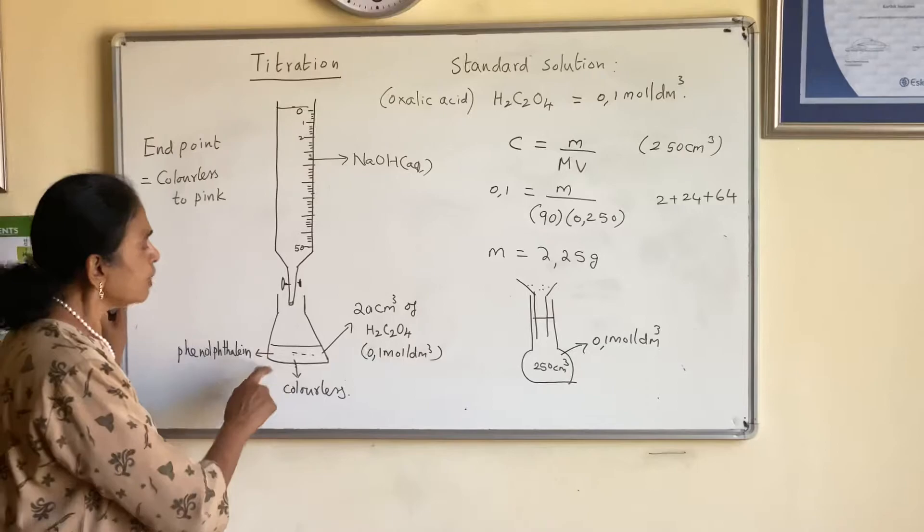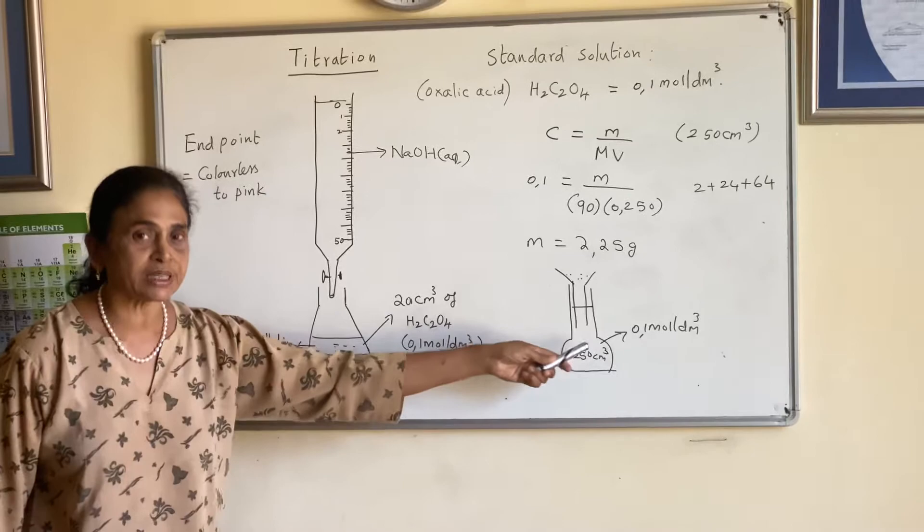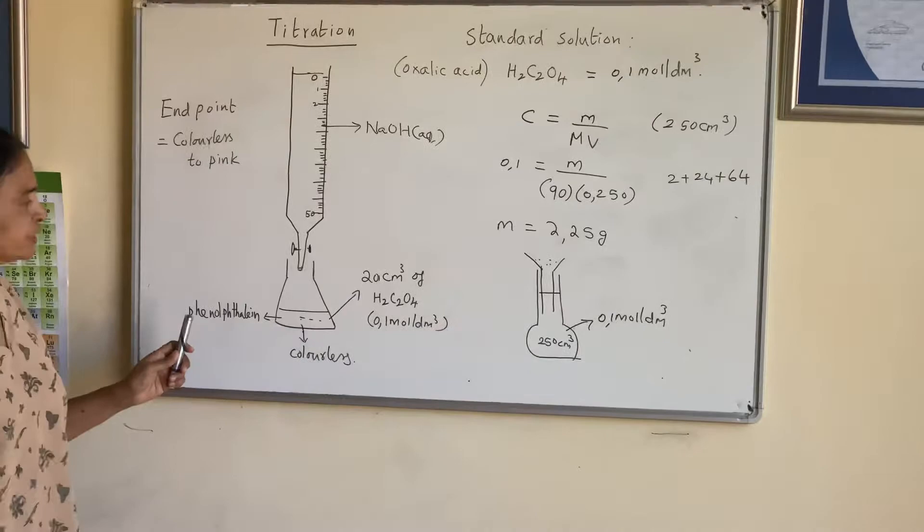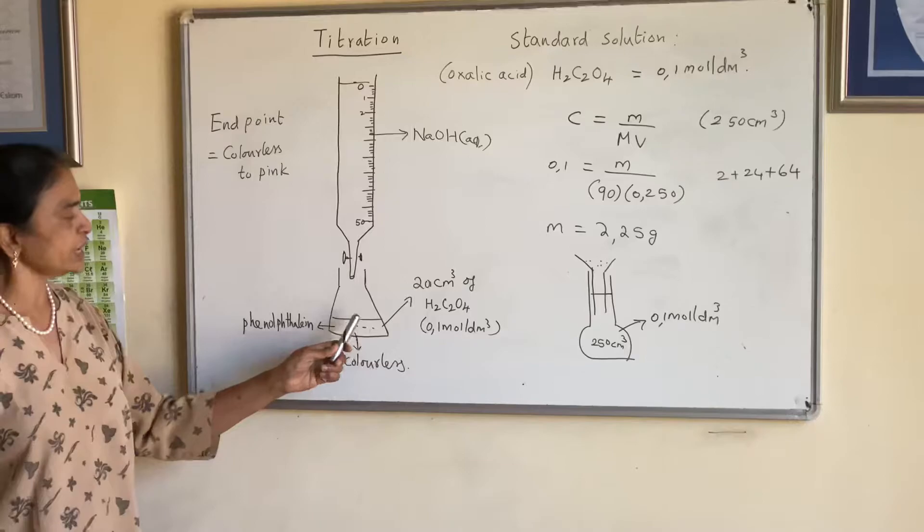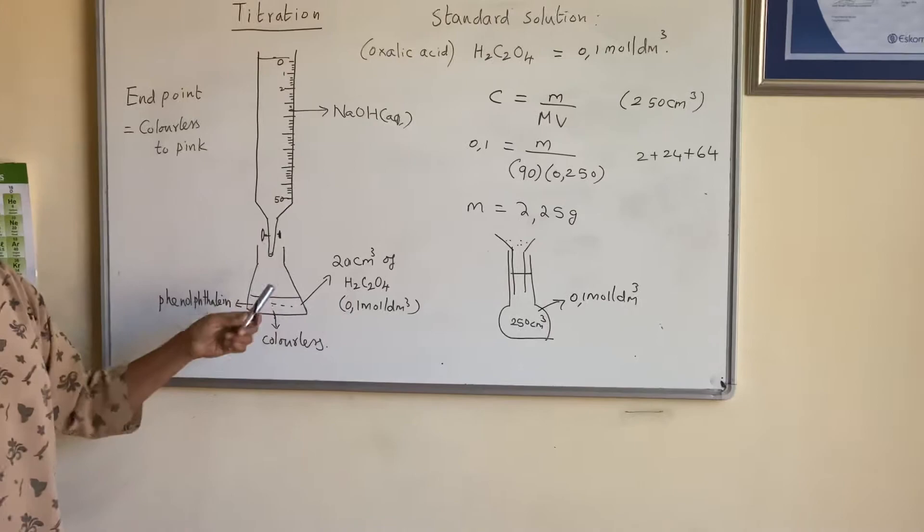In the conical flask, take 20 cm³ from the prepared standard solution and add it. The indicator we are going to use is phenolphthalein. When phenolphthalein is added to an acid it has no color, but when sodium hydroxide is added the color will change.